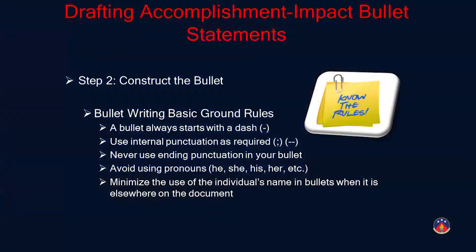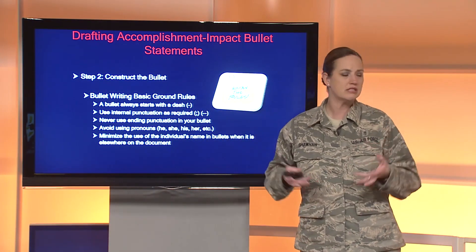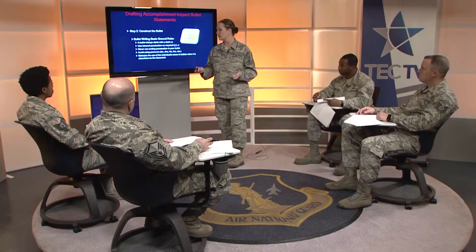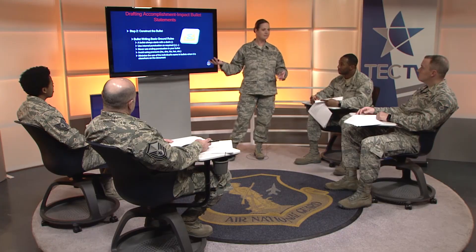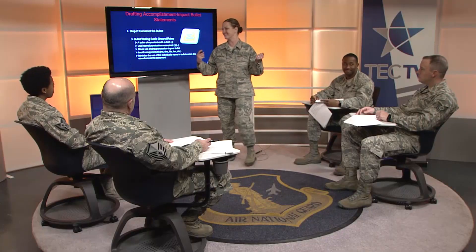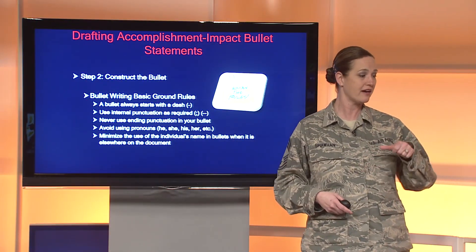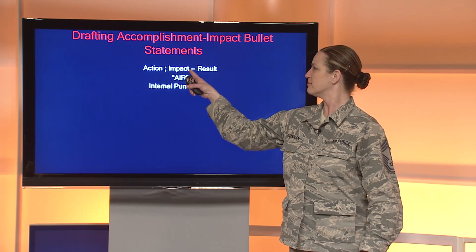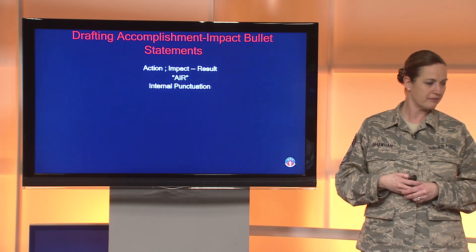Step two is constructing the bullet itself. The ground rules: start with a dash up front, use a semicolon and double dash in the middle dividing the three parts, and do not use ending punctuation — because it's not a full sentence. We also don't use pronouns or the individual's name for the same reason, and the name should already be on the form up top. We build our accomplishment impact statement using action, impact, and result.